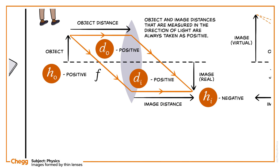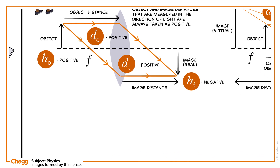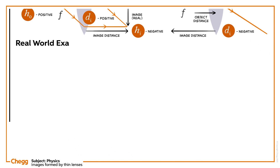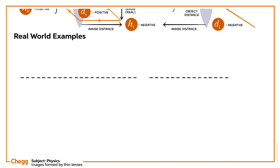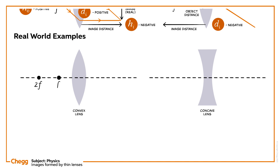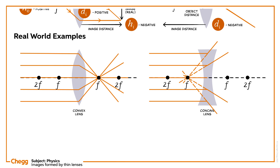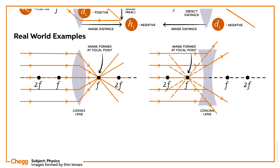Let's have a look at this via this figure. Let's see how the location of the image changes on changing the location of the object, and understand how the size of the image changes with the change in the location of the object. If the object is placed at infinity, then the images by convex and concave lenses will be formed at the focus point. We can see the images formed in the figure.